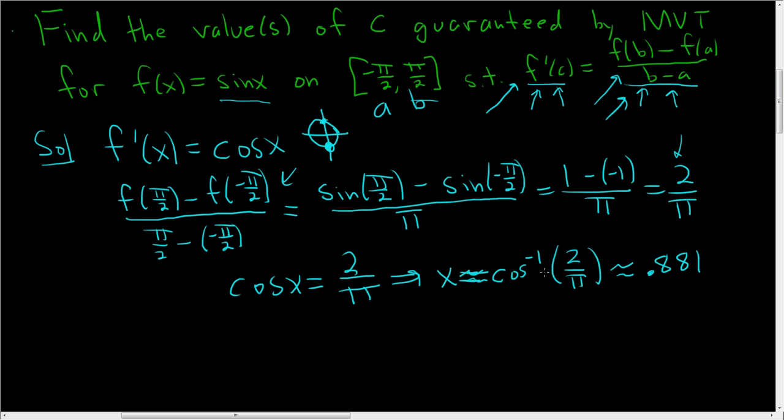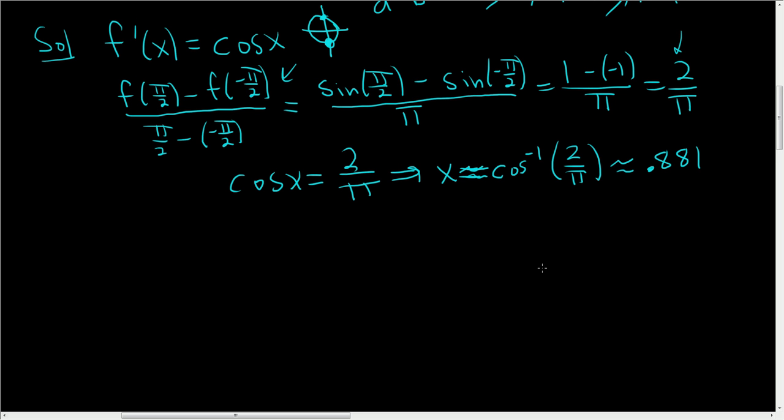And so your calculator will give you something like 0.881, something like that. And that's actually correct, 0.881. Now here's the trick. Is there another value in our interval that, you know, for which this equation is true?